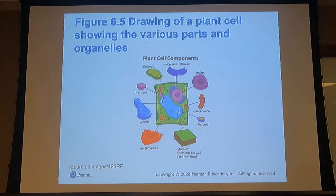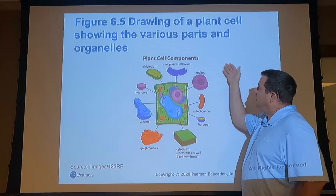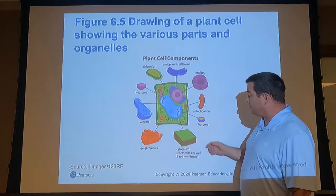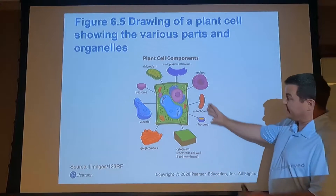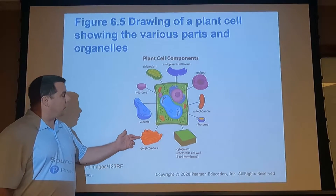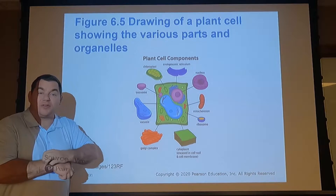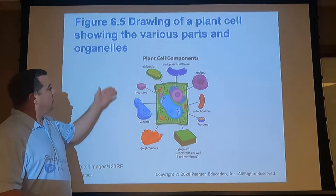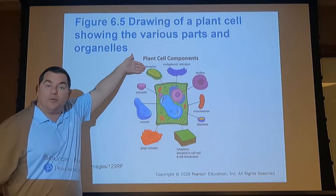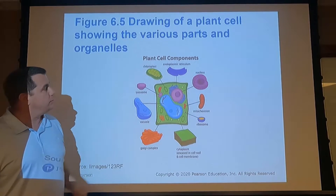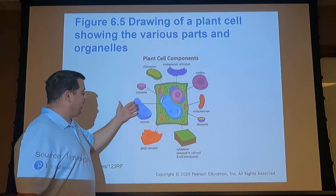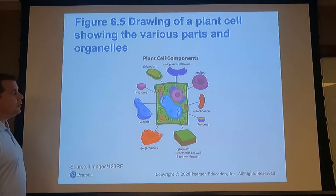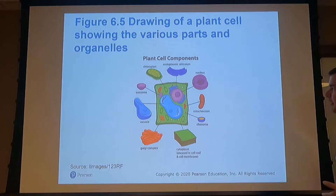Plant cell components — starting at about 12 o'clock — include the endoplasmic reticulum, the nucleus (the brain of the cell), the mitochondrion (the powerhouse of the cell), ribosomes, cytoplasm to keep everything in place, Golgi complexes, the vacuole (the garbage disposal — all byproducts of cellular processes go into the vacuole), lysosomes, and — critically for plants — the chloroplast, where photosynthesis occurs.